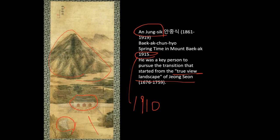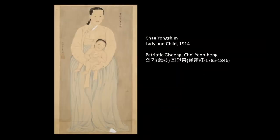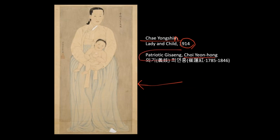An Jong-sik studied European painting too. He'd been to Beijing and emphasized realistic drawing. Chae Yong-shin is another important painter of this time. This is 1914 — again, after the Joseon dynasty collapsed. He painted the subject matter of Chae Yong-hong, who was a patriotic gisaeng who lived in the late Joseon dynasty.